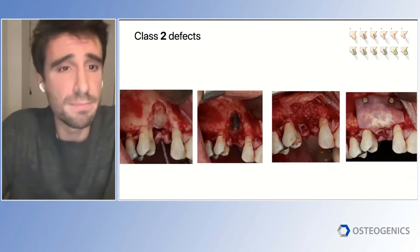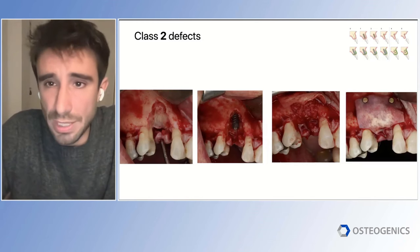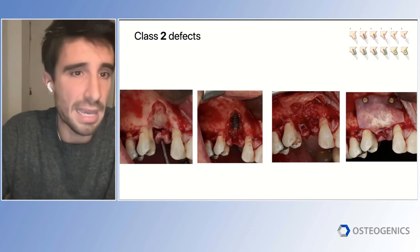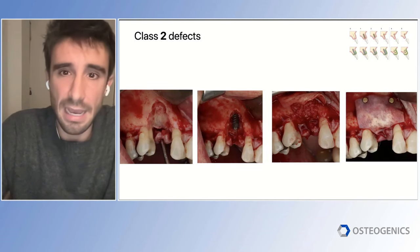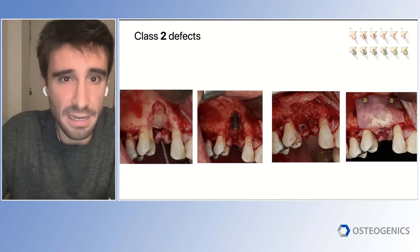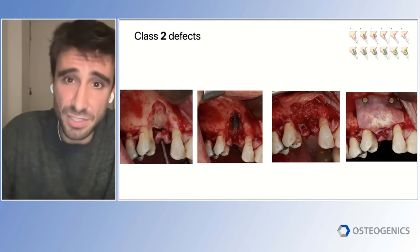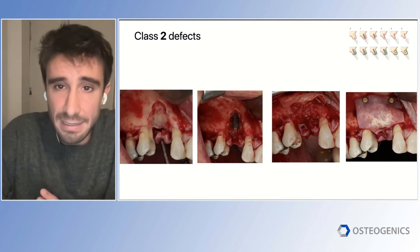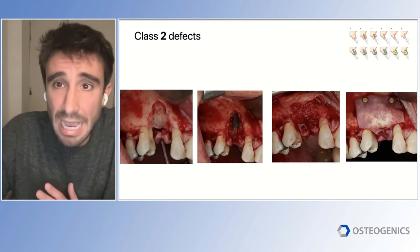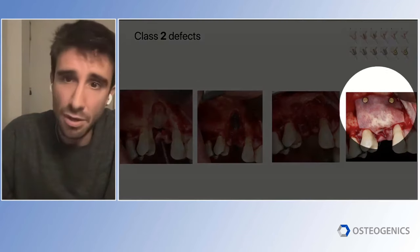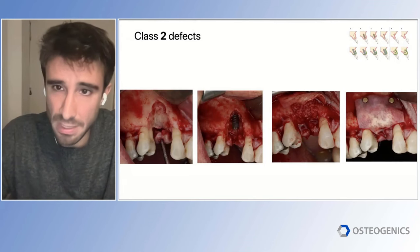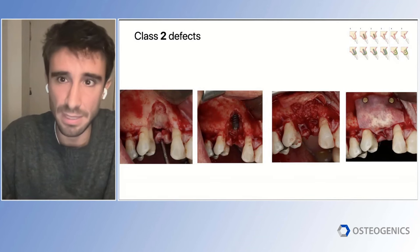Of course, we are not going to treat all defects the same way. Sometimes we are facing defects with a very good bony housing and very nice bony walls. In these types of cases with such good morphology, we can just place our graft in the defect, and the stability of the graft is going to be ensured by the retention given by the surrounding bony walls. All we have to do in these scenarios is cover with our collagen membrane to promote cell exclusion.